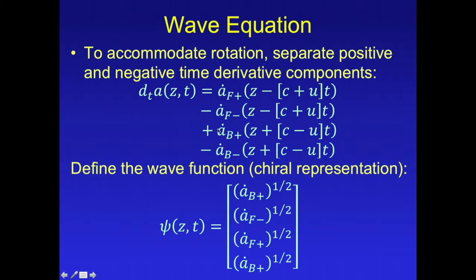To accommodate rotation in three dimensions, we separate the positive and negative time derivative components, as shown here, where each of these time derivative terms is positive definite. The reason we do this is that the positive axes are right-handed, and the negative axes are left-handed, and therefore they behave differently under rotation. For example, if you take negative x cross negative y, you do not get negative z.